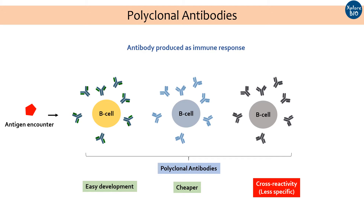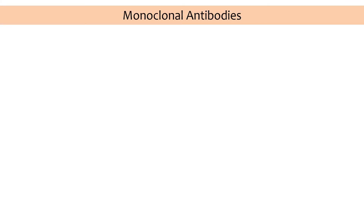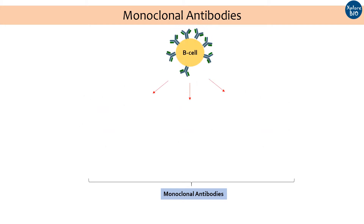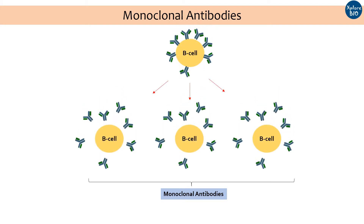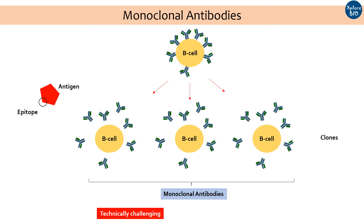This makes them less specific. Thus, for sensitive applications like disease diagnosis and targeting, polyclonal antibodies are less suitable. Monoclonal antibodies are antibodies derived from a single type of B cell population — exact clones of each other — and thus identify and bind a specific epitope of an antigen. Their development is sophisticated, technically challenging, and expensive, but the chances of cross-reactivity with other antigens is very low.